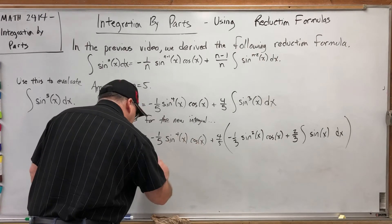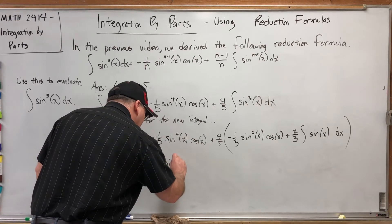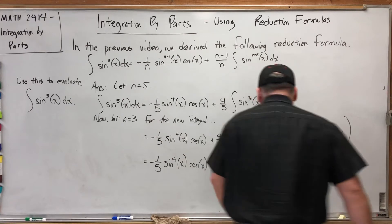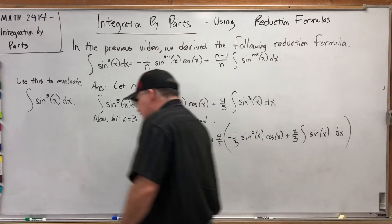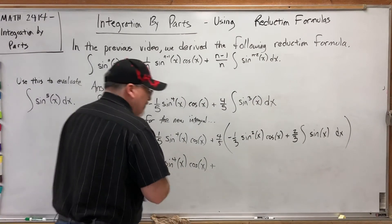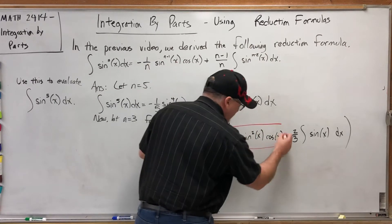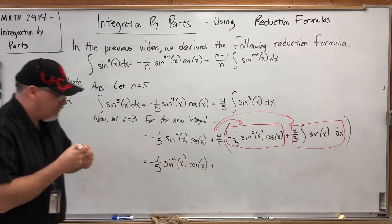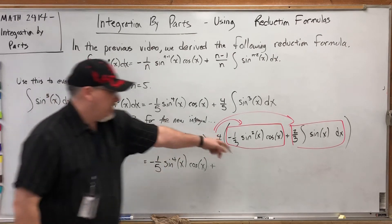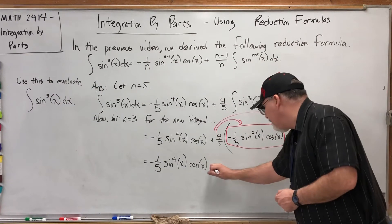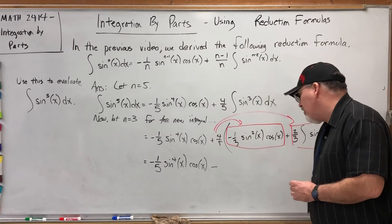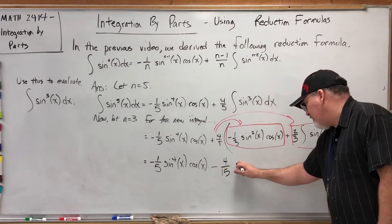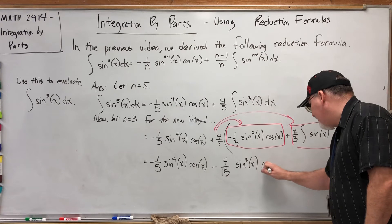All right, so this first part is done: negative one-fifth sine to the fourth power of x cosine of x. Let's go to tenths. Actually the first part of the distribution will be negative because if you look at both halves of this addition problem, this four-fifths is going to be distributed to both halves of the addition problem. The first half of the addition problem is already negative, so actually the next term will be negative. Four-fifths times negative one-third is negative four-fifteenths. The trig functions are changing. We have sine squared of x cosine of x.